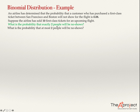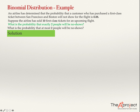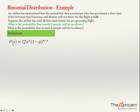Let's solve the first question: what is the probability that exactly two people will be no-shows? First, notice that this is a binomial distribution problem. Even if they don't tell us that, we can see there is a total number of trials equal to 10. We are checking these 10 customers, and the probability that one of these customers doesn't show is 0.08. This probability is constant across all trials, confirming this is a binomial distribution.